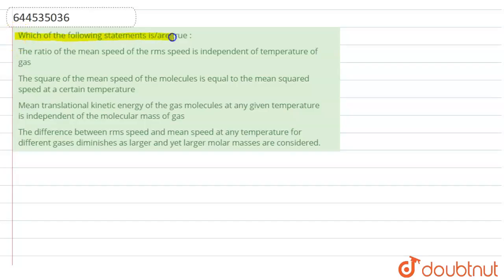Hello everyone. In this question, we need to find which of the following statements is true. Statement A says that the ratio of mean speed to the RMS speed is independent of temperature of the gas. Let's find out.